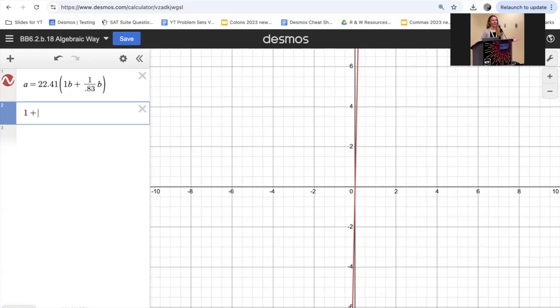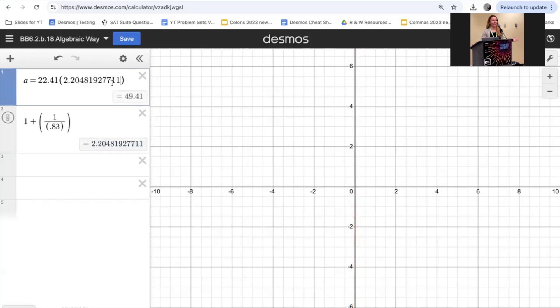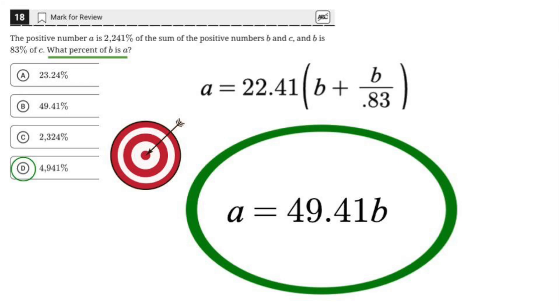To solve algebraically, we can combine like terms to get 1B plus 1 divided by 0.83B, that gives us 2.2 times B. Copy and paste that number in here, and now you know that A is 49.41% of B.